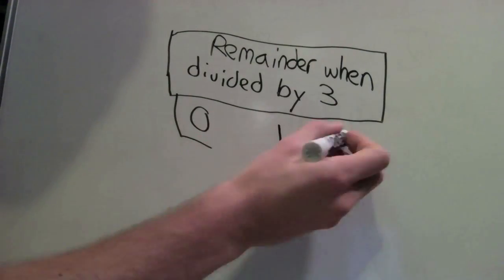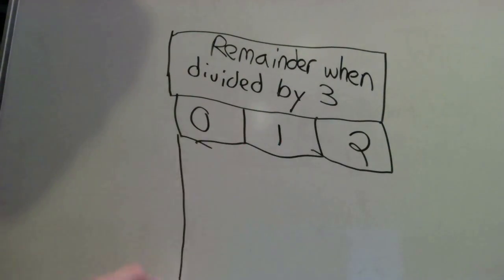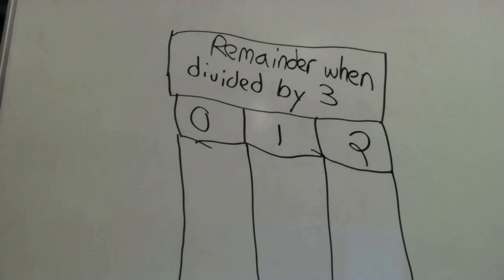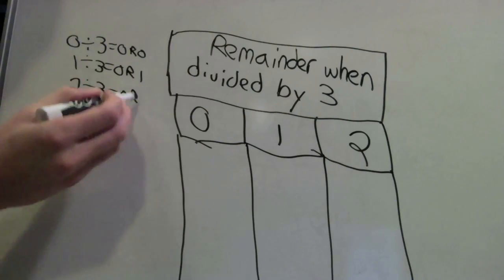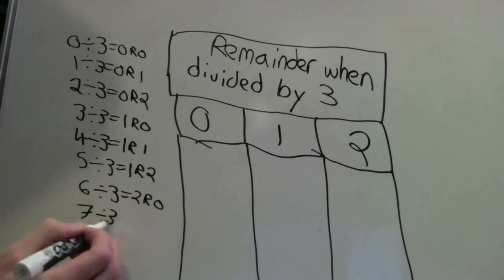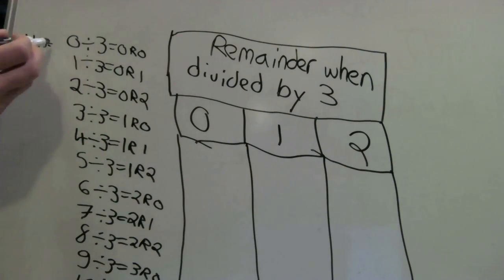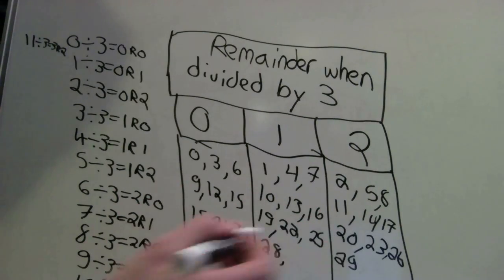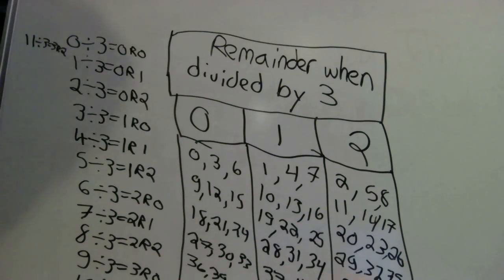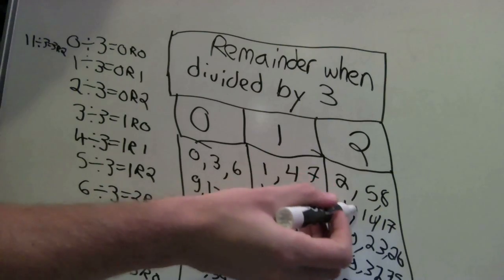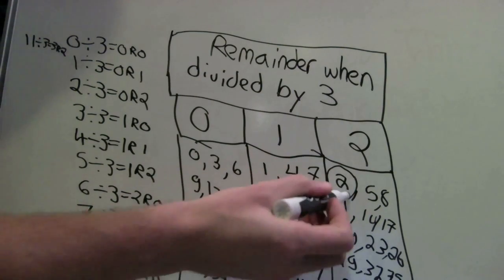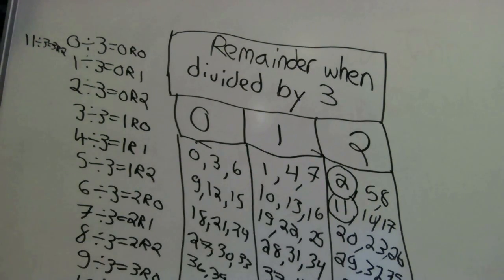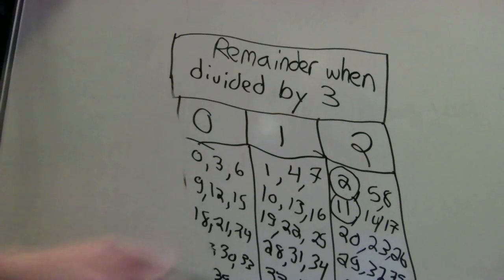There are three options when you divide by three — only three remainders that we can see. Just three groups for every integer. Eleven is two — this could not be stranger, unless you know modular math.